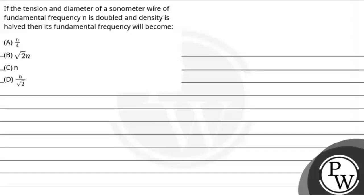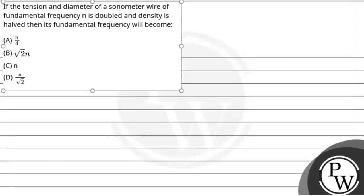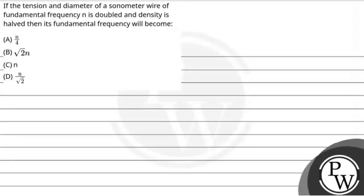Hello Bacho, let's read this question. The question says if the tension and diameter of a sonometer wire of fundamental frequency n is doubled and density is half then its fundamental frequency will be.